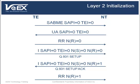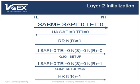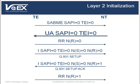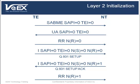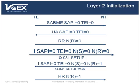This is the layer 2 establishment process. As this chart shows, the TE sends a SABME frame with a SAPI of 0 for call control and setup initiation, and a TEI of the value previously assigned by the network — in this example, TEI 0. Next, the NT responds with a UA frame with a SAPI of 0 and the previously assigned TEI to acknowledge receipt of the connection request. The TE indicates that it can begin receiving frames by sending a receive ready frame. Layer 2 connection has now been established and is ready to offer service to layer 3 setup. The TE then sends an I-Frame with a SAPI of 0 and the previously assigned TEI to transport the Q931 setup message.